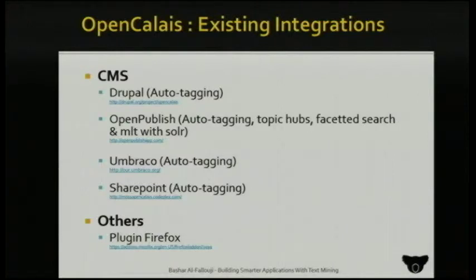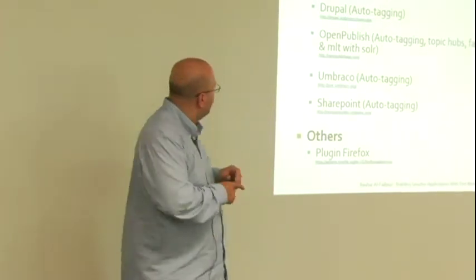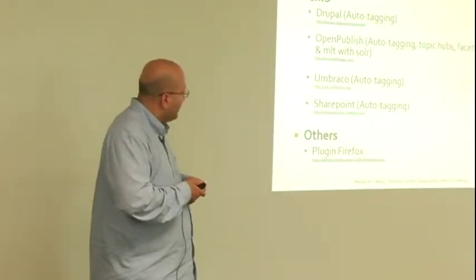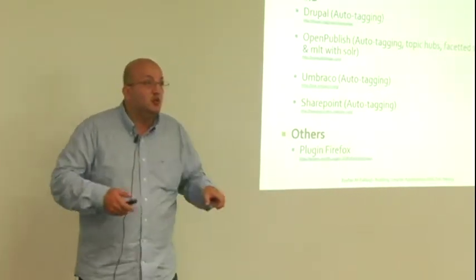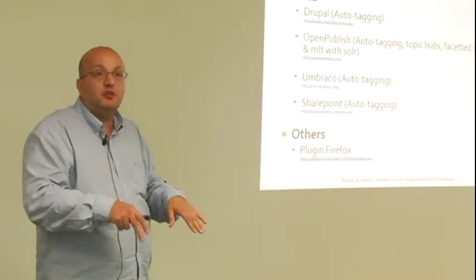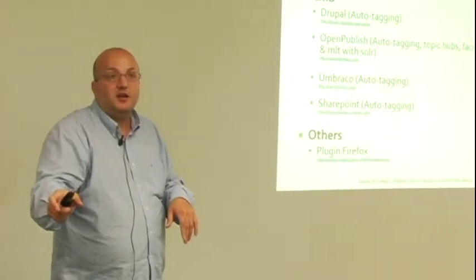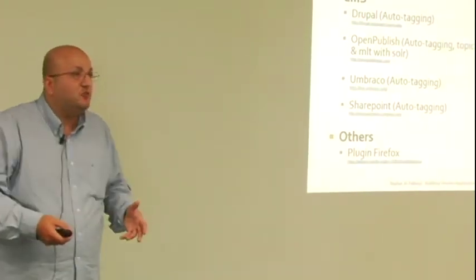There are other integrations. There is Open Publish, which is basically a combination of Solr — a search engine based on Lucene — with Open Calais. It's a very strong combination because Solr offers faceted search, and you can use the entities as facets. There's also Umbraco for auto-tagging, SharePoint, and even a Firefox plugin that leverages Open Calais — you install it and every time you browse to a page, it sends it to Open Calais and gives you tagging. I'm not sure how useful that is, but it's fun to watch.